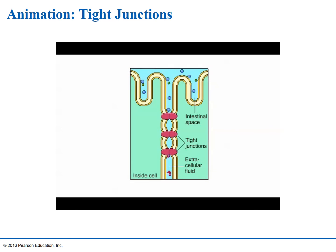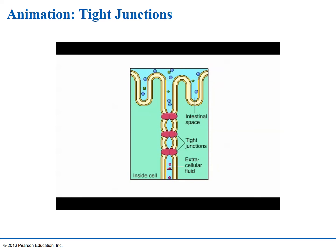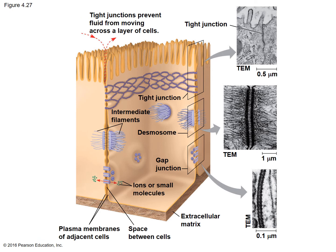The last one is tight junctions. Tight junctions bind cells together and are found predominantly in epithelial tissues such as the lining of the intestines. Tight junctions form a barrier that prevents fluids from moving between the intestinal space.